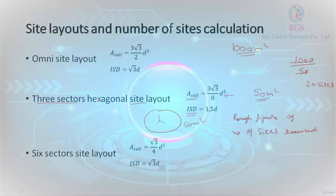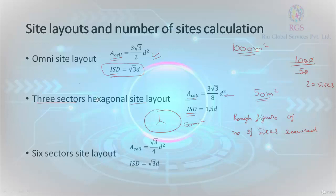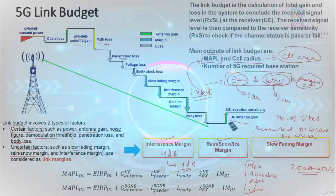This is the formula for getting cell area in the case of an omnidirectional site, along with the formula for inter-site distance of an omnidirectional site layout. For a three-sector site I've already discussed it, and for a six-sector site there are corresponding formulas for cell area and inter-site distance. In a nutshell, the concept of link budget is the same regardless of technology — whether you are considering 4G or 5G, the concept remains identical.